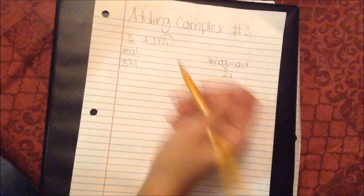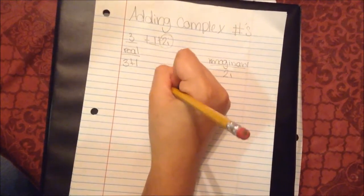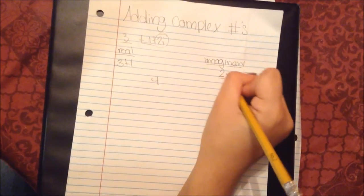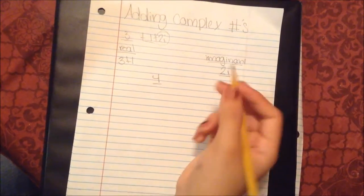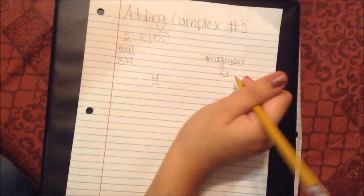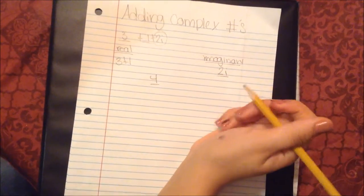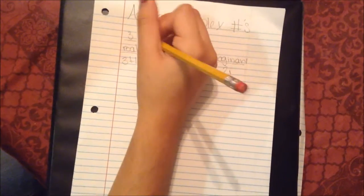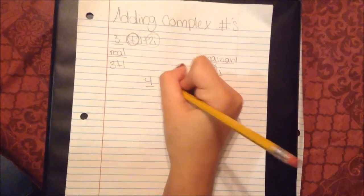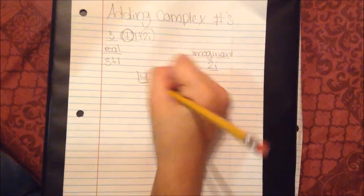So we are going to add them. And since this one does not contain an i, you cannot combine them. And in order to find out whether they are going to be added or subtracted, you are going to look back to the equation. And it has an addition sign. Therefore, it is going to be added. And that is your answer.